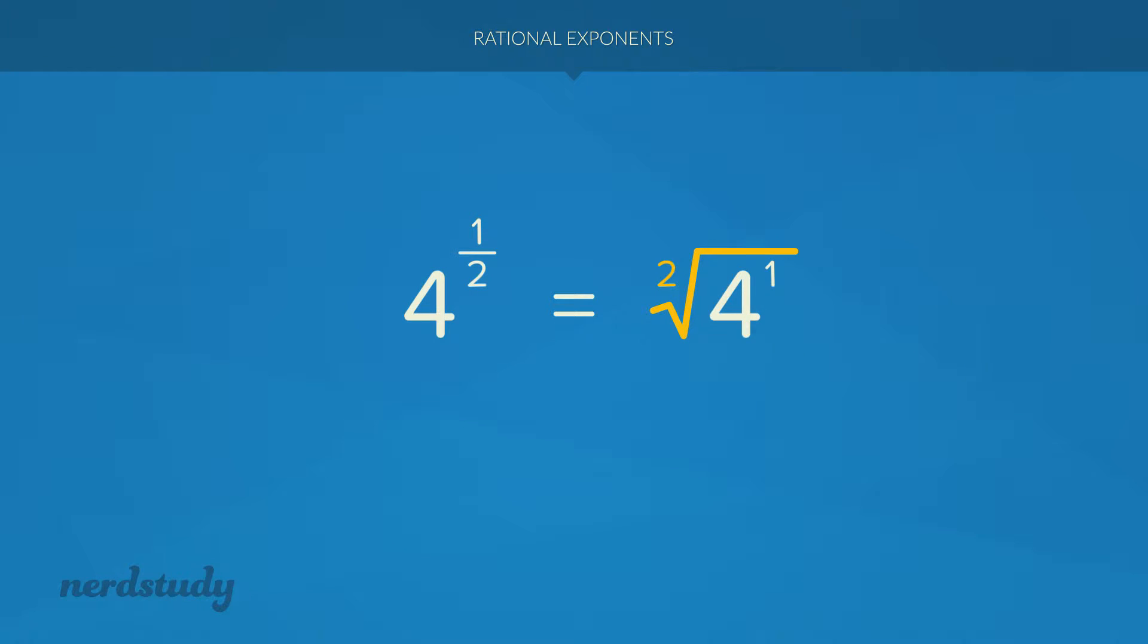What we end up with is square root of 4 to the exponent 1. So once again, you can see that from the exponent, the denominator is what determined the degree of the root. Of course, since the denominator is 2, we have a root of degree 2, more commonly known as a square root. And since the numerator is 1, we're looking for the square root of 4 to the exponent 1. And of course, the square root of 4 can be further simplified to 2.